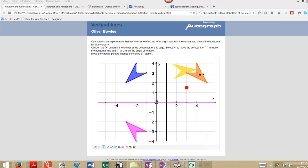So this investigation is reflecting object A in the blue line to get the blue image and then reflecting the blue image, not the original object, but the blue image in a horizontal line to get the purple image.